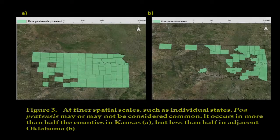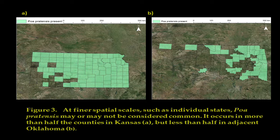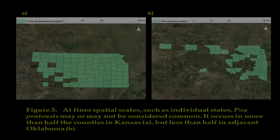When you take it down a level to the state level, the same thing occurs. For example, Kentucky bluegrass is common in Kansas, occurring in more than half the counties. However, it is not common in adjacent Oklahoma. So commonness is definitely more variable at the state level.